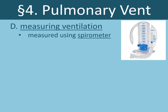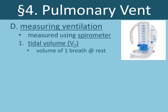It can be important to measure the various facets of ventilation. We do this using a device called a spirometer. For lecture, you should know five different measurements of ventilation. First is tidal volume — the volume of one normal breath of air during rest. On average, the tidal volume is about 500 milliliters, and on average we take about 12 breaths per minute.